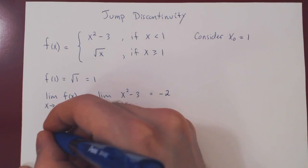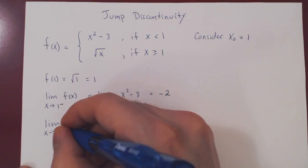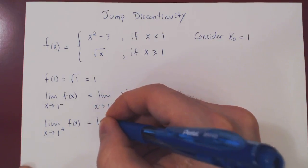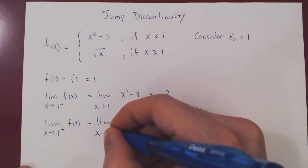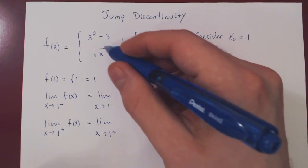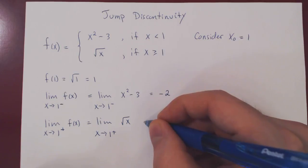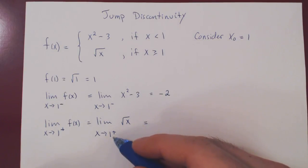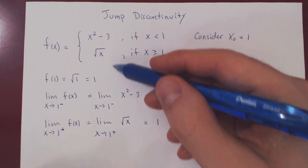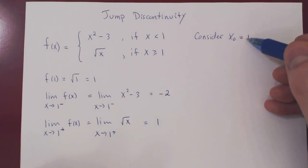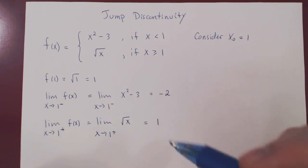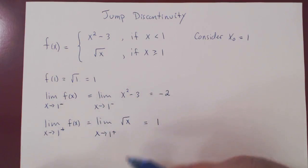Now let's look at the limit as x approaches 1 from the right-hand side. If we are approaching 1 from the right, then x is slightly larger than 1, so f of x is the square root of x. As x approaches 1, root of x approaches the square root of 1, which is also 1. So: the function is defined at x equals 1 with value 1, the limit from the left exists and equals negative 2, and the limit from the right exists and equals 1.